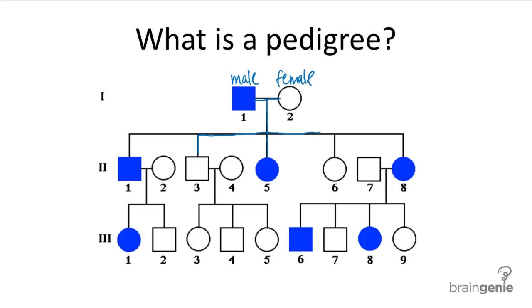So let's say that this pedigree chart examines the trait of curly hair. Any individual that's colored in blue exhibits curly hair.